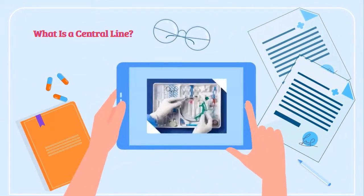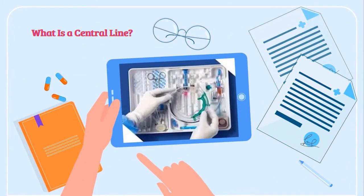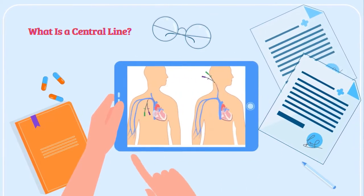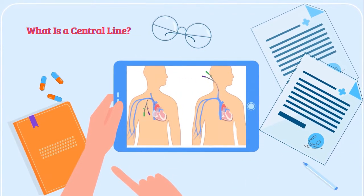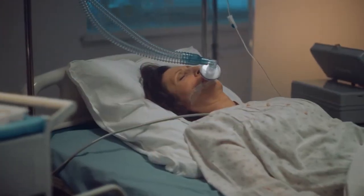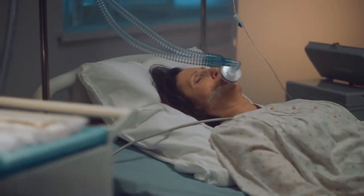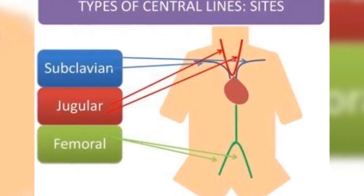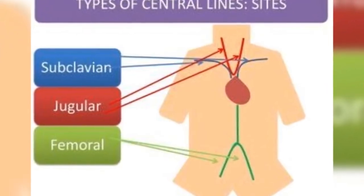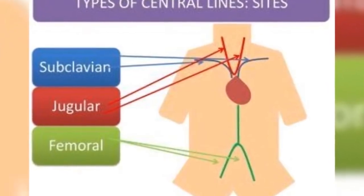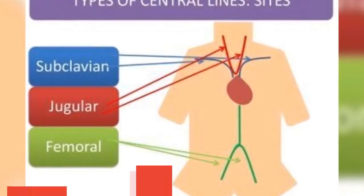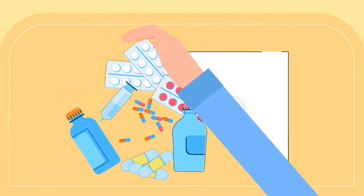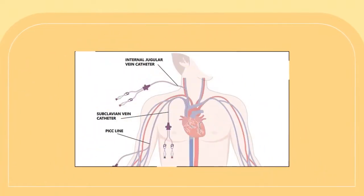This is a central line. Central lines provide a direct route into the bloodstream, bypassing the body's natural defenses. This direct access is crucial for patients who need long-term medication, nutrition, or fluids. It differs from regular cannulas and peripheral access because the central line is a thick catheter that accesses the large central veins — often placed in the internal jugular vein, subclavian vein, or femoral vein.